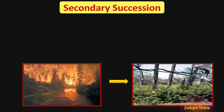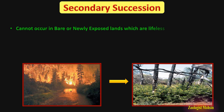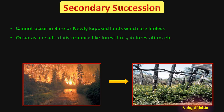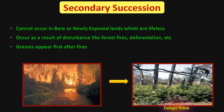Secondary succession does not occur in bare or newly exposed lands. It occurs where a climax community was already present and was destroyed by natural disasters like forest fires, earthquakes, or landslides. The community is apparently destroyed, but soil and some deeper roots or remnants of plants are still present beneath the earth as well as in nearby areas.